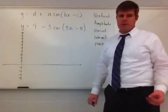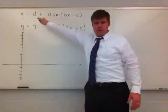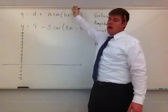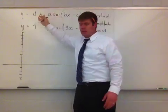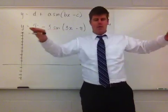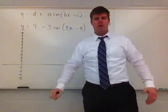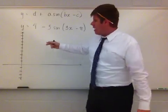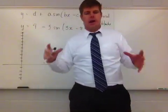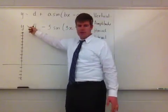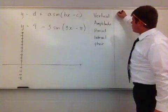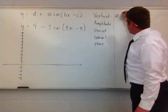The first thing I always look for is: is there a vertical shift? If we take a look at this original generic function, which is y equals d plus a sine of the quantity bx minus c, where d represents your vertical shift. I'm always going to look for — am I taking my center axis and moving it up or down? In this case, I have a value of positive 4 that is being added to the actual function, so I have a vertical shift up 4.